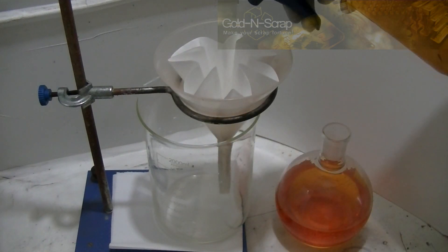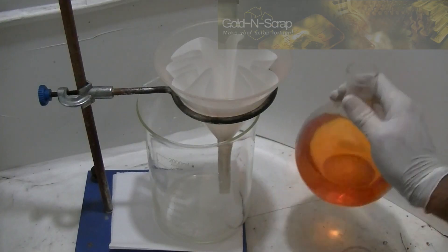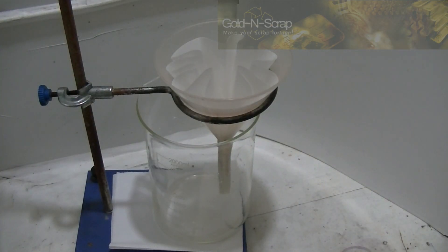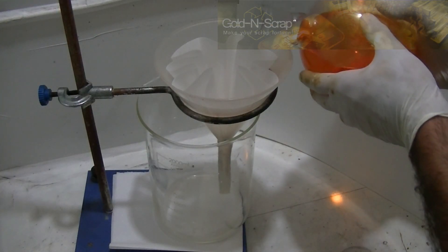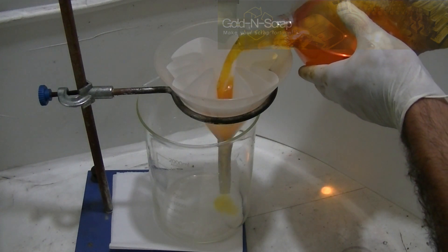The fluted filter paper sets in the funnel as soon as it gets wet. First, the bulk of the gold solution which is free and clear of solid particles is poured to the filter. This portion will run down very fast.